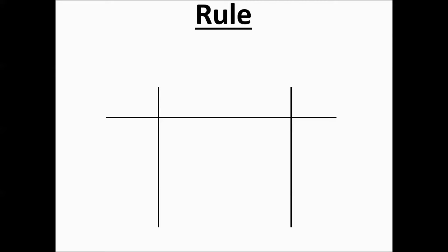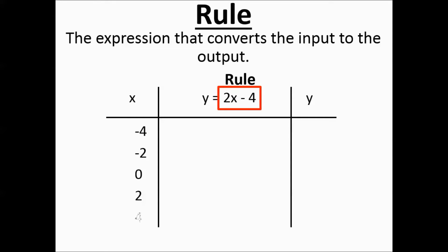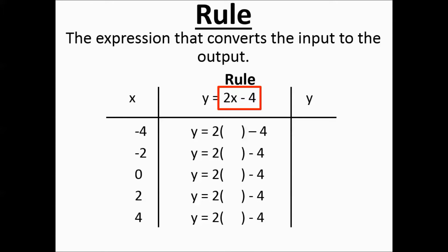The rule is an expression that converts the input to the output — what you're doing to the input to get the output. You've got your X, you've got y = 2x − 4, and then you have a Y. The part in the red box is known as the rule.